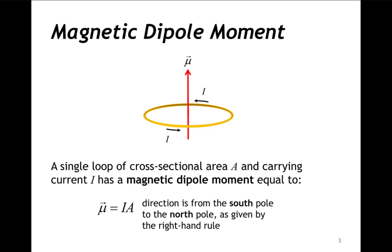A current loop's magnetic moment is a quantity that frequently appears when working with loops of currents and the magnetic fields they generate. A loop's magnetic moment is a vector, defined as the product of the loop's current and the area it bounds, acting in the direction of the magnetic field along the loop's central axis, from south to north.